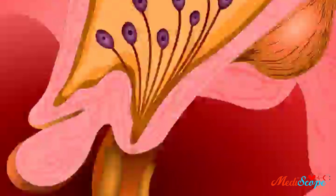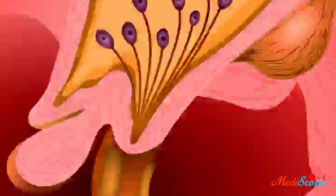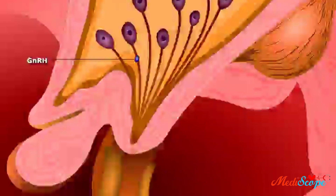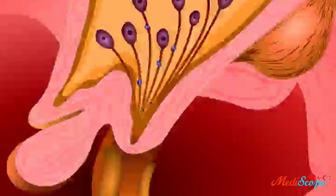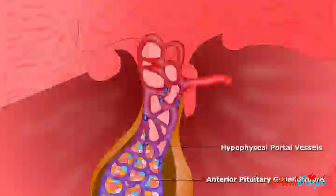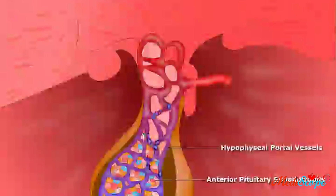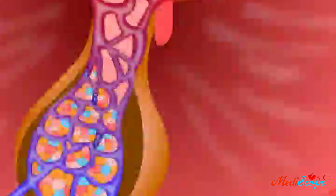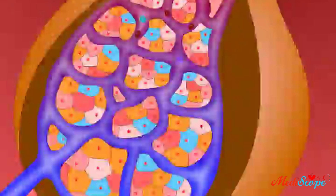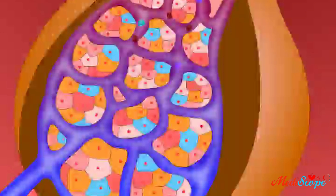Let's zoom into the hypothalamus. Of all the hypothalamic hormones that work on the pituitary gland, the most important one for the male reproductive system is gonadotropin releasing hormone, or GnRH. In the hypothalamus, the neural secretory cells synthesize GnRH, which is secreted in pulses into the hypophyseal portal vessels. The pulsatile release of GnRH prevents down-regulation of its receptors in the anterior pituitary.